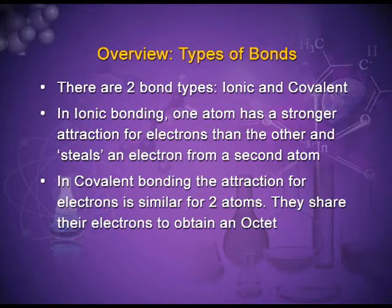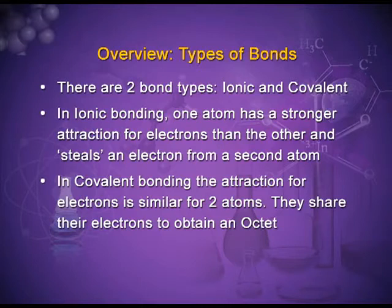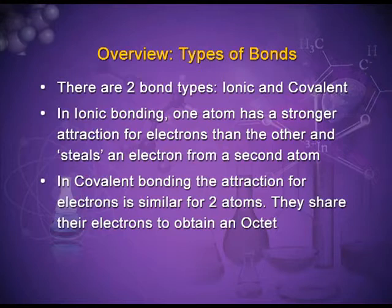Let us have an overview of the two types of bonds. In ionic bonding, one atom has a stronger attraction for electrons than the other and it steals an electron from a second atom. Kossel and Lewis studied the nature of noble gases and concluded that noble gases do not undergo chemical combination because of their complete octet.